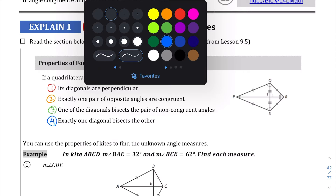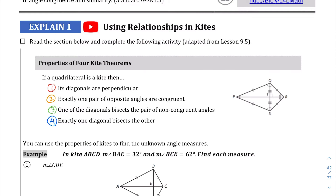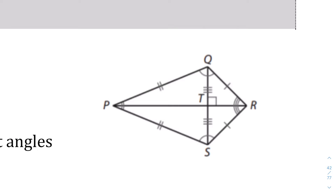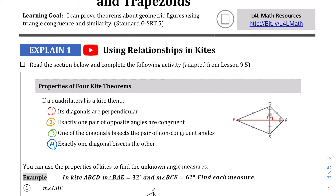Let's talk about that first one — its diagonals are perpendicular. So theorem 1 says if you were to draw a diagonal right from the corners, you're going to have a perpendicular angle that's created. That's very similar to one of the other theorems from when you have a rhombus — the diagonals are perpendicular.